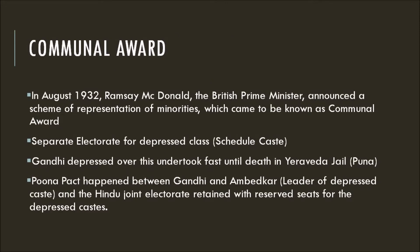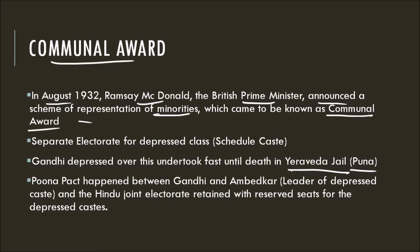As soon as Gandhiji returned to India after attending the second roundtable conference, he was immediately arrested and put in Yerwada jail, Pune. In August 1932, Ramsay MacDonald, the British Prime Minister, announced a scheme for representation of minorities which came to be known as the Communal Award. This Communal Award introduced a separate electorate for the depressed class — that is, a separate electorate for Scheduled Caste people.